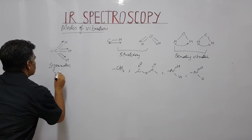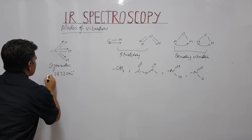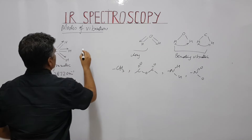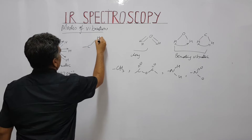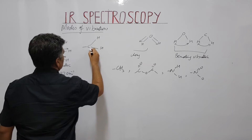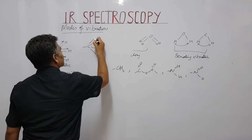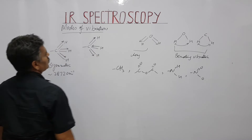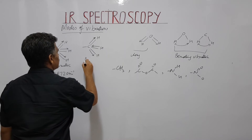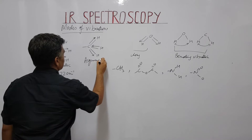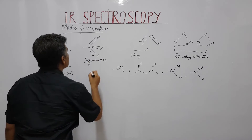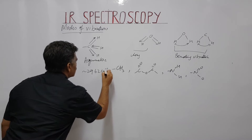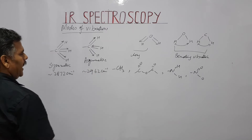For methyl, the symmetric stretch appears at 2872 cm⁻¹. In the case of anti-symmetric stretch for methyl, not all C-H bonds move in the same direction — some stretch while others compress — and its value is 2962 cm⁻¹.